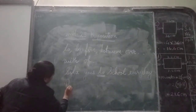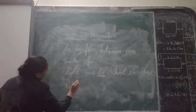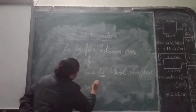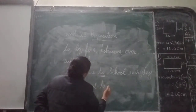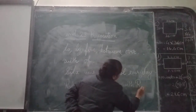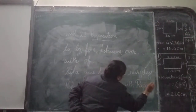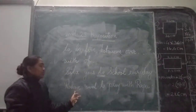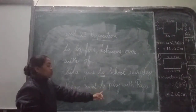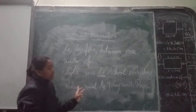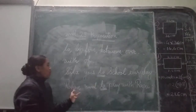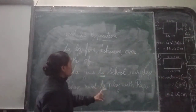Rohan went to play with Raju. See here — Rohan went to play with Raju. Rohan jis ke saab khilne ke liye gaya hai, Raju ke saab. Rohan ko Raju ke saab jodne ke liye jho hai — so these are the prepositions.